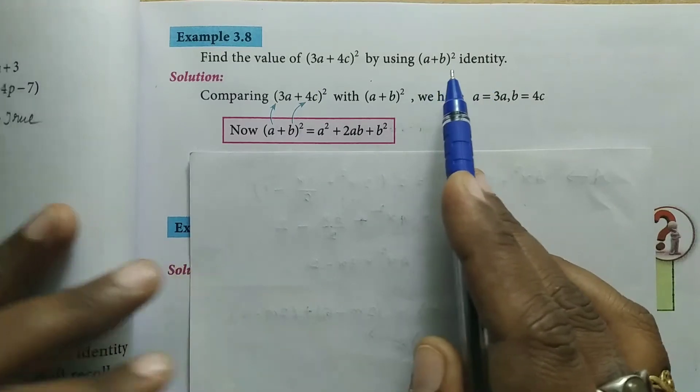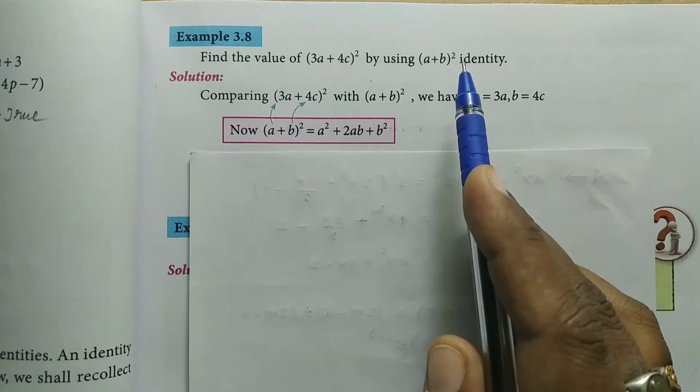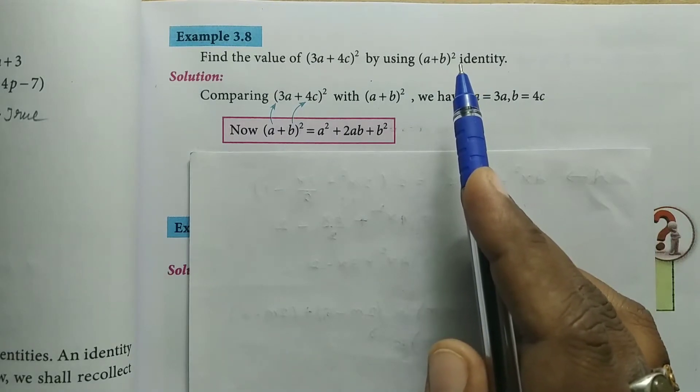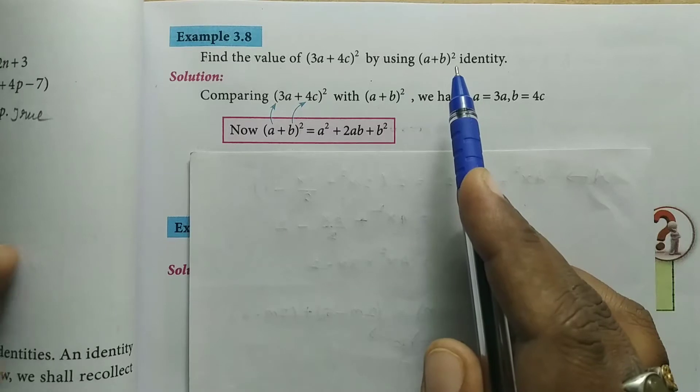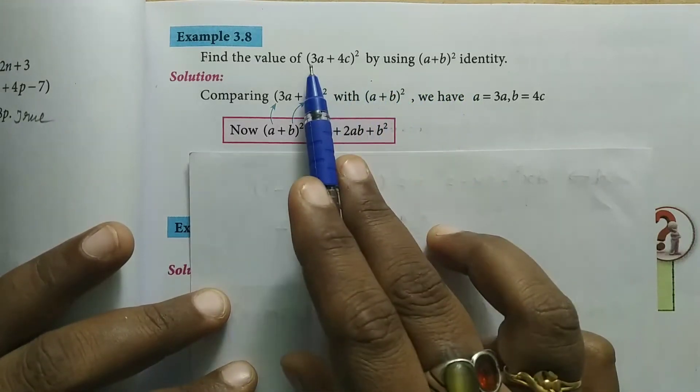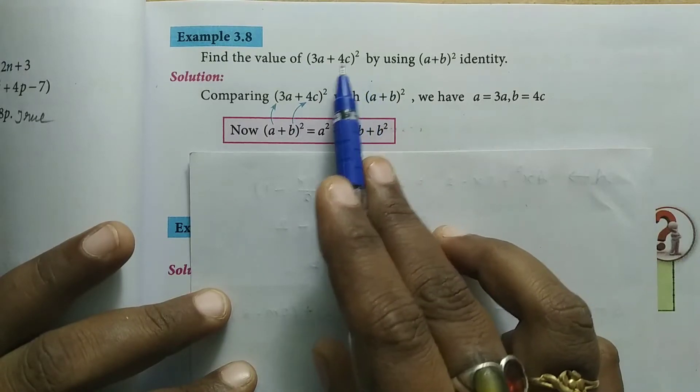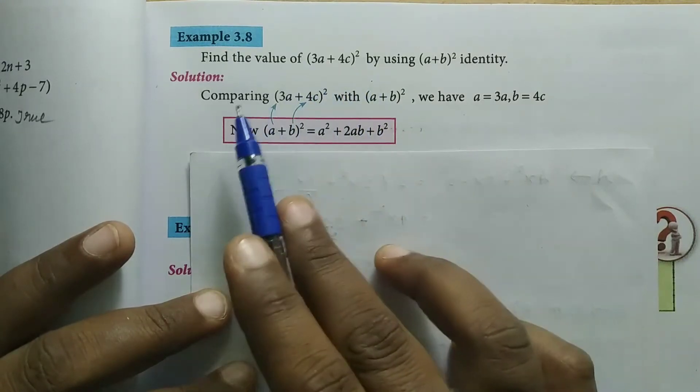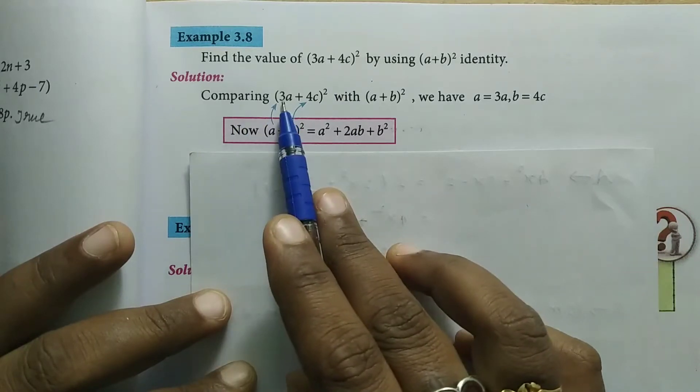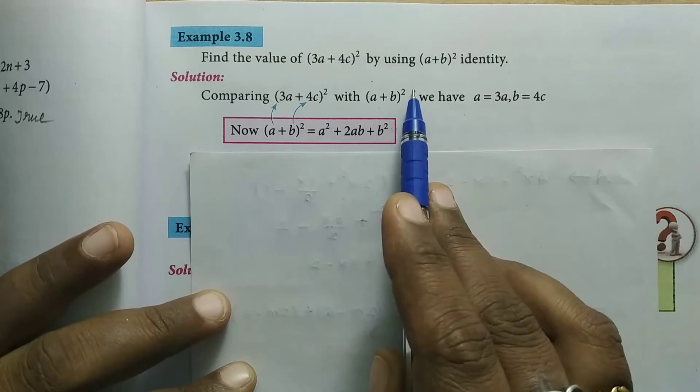So, we have three basic formulas: (a + b)², (a - b)², and a² - b². Last year we learned these. Now we'll use the (a + b)² formula. To find the value of (3a + 4c)², we compare (3a + 4c)² with (a + b)².